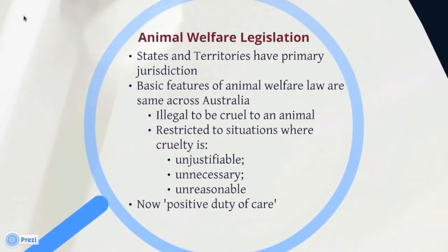Under the Federal Constitution, the states and territories have primary jurisdiction for animal welfare in Australia. Although there are a number of differences between the different state and territory acts, the basic features of the laws are the same. Specifically, in every state and territory it is illegal to be cruel to an animal. This general overarching prohibition against cruelty is expressed in broad terms and, with the exception of the ACT, is restricted by general words of qualification — cruelty is prohibited so long as the pain imposed on animals is not unjustifiable, unreasonable or unnecessary. A recent trend in state and territory legislation is the imposition of a positive duty of care, recognising that animal welfare requires more than just prohibiting cruelty.